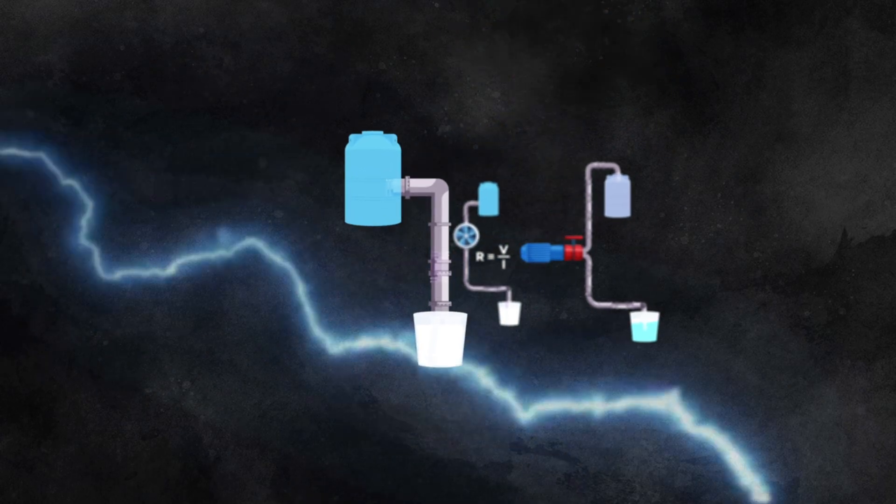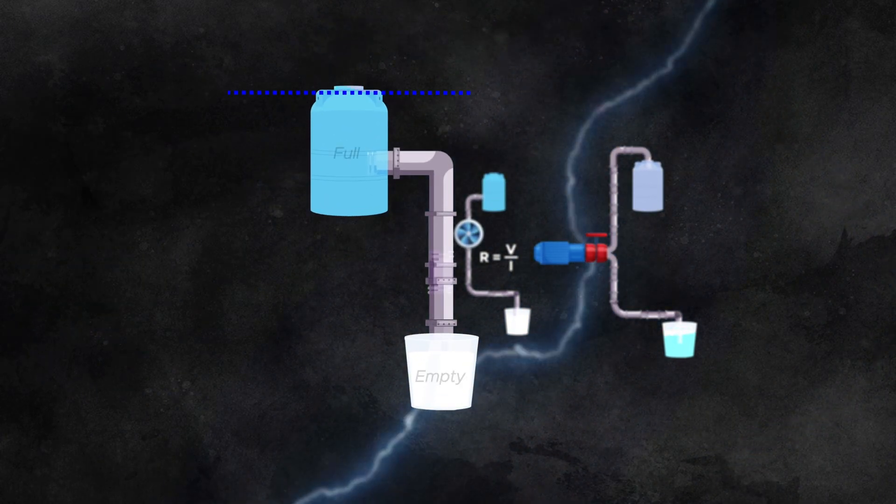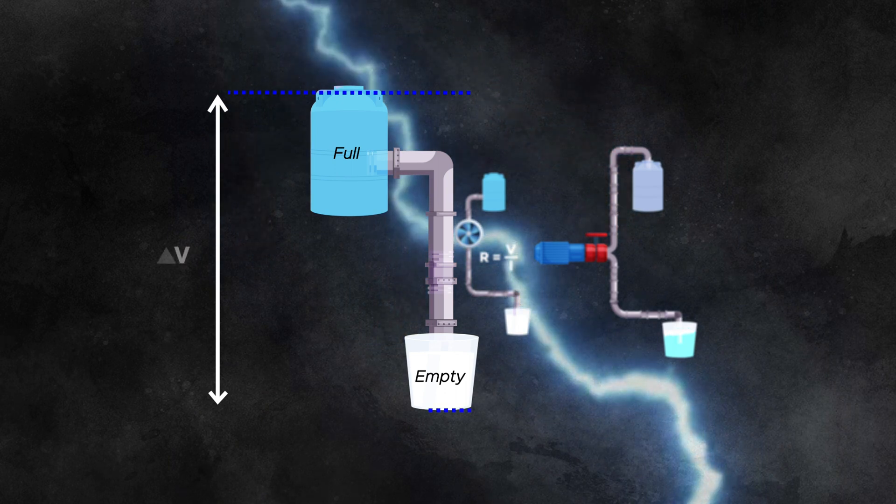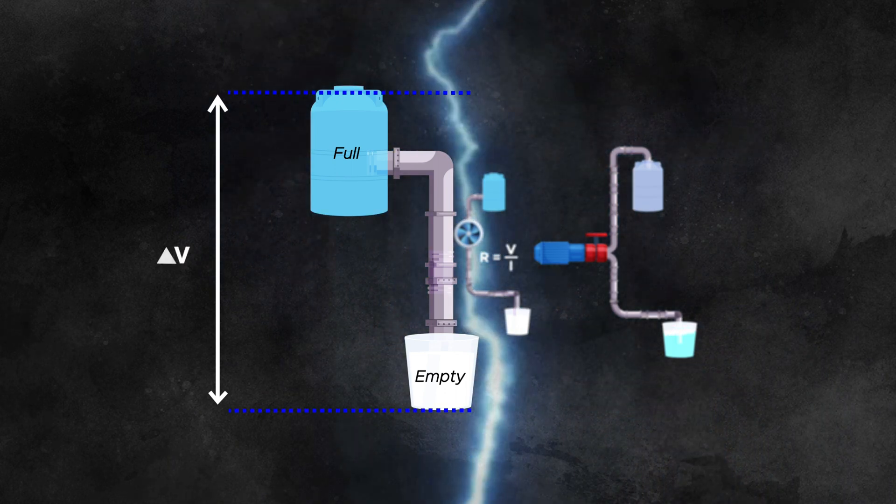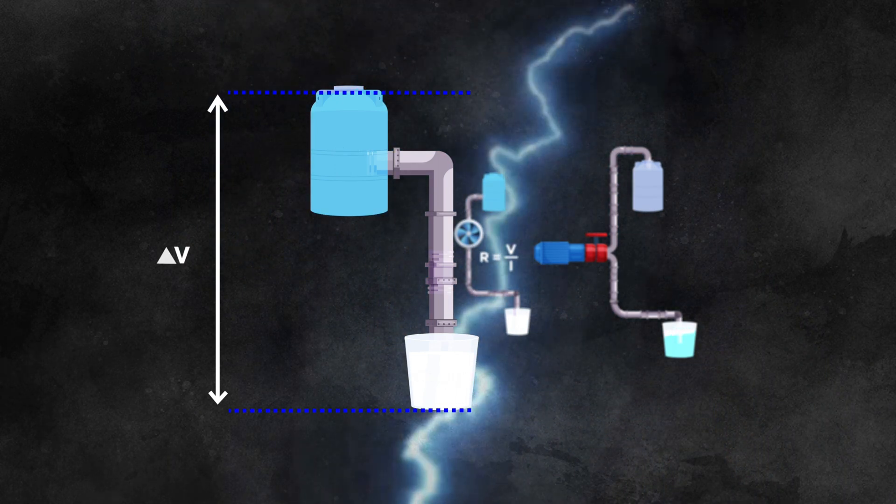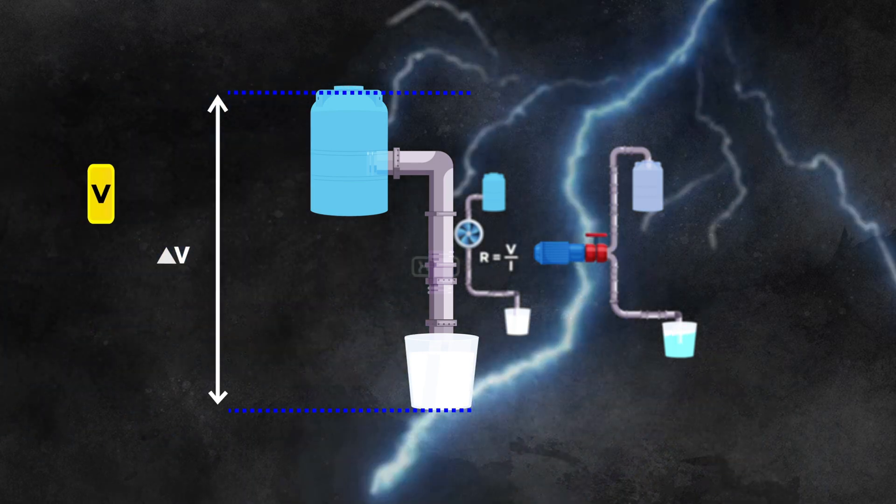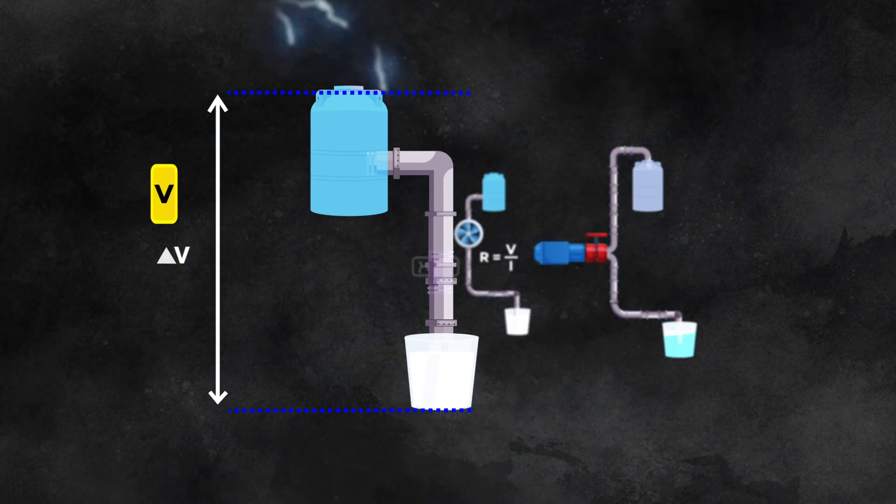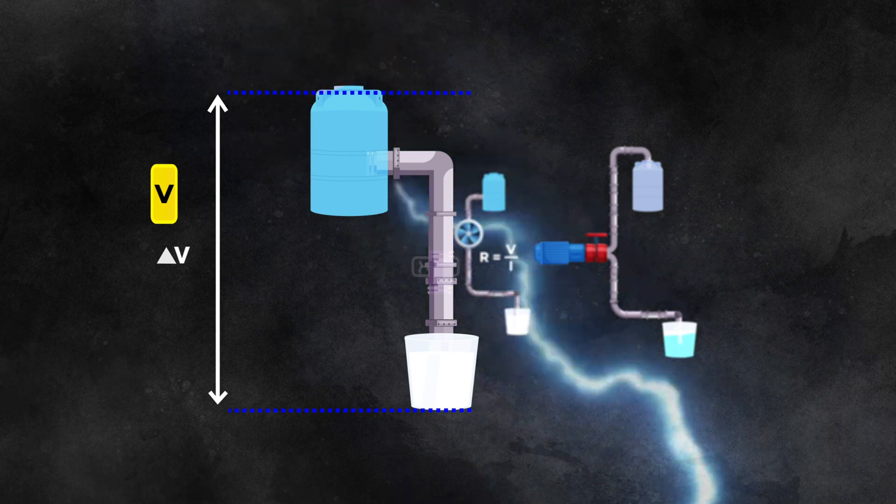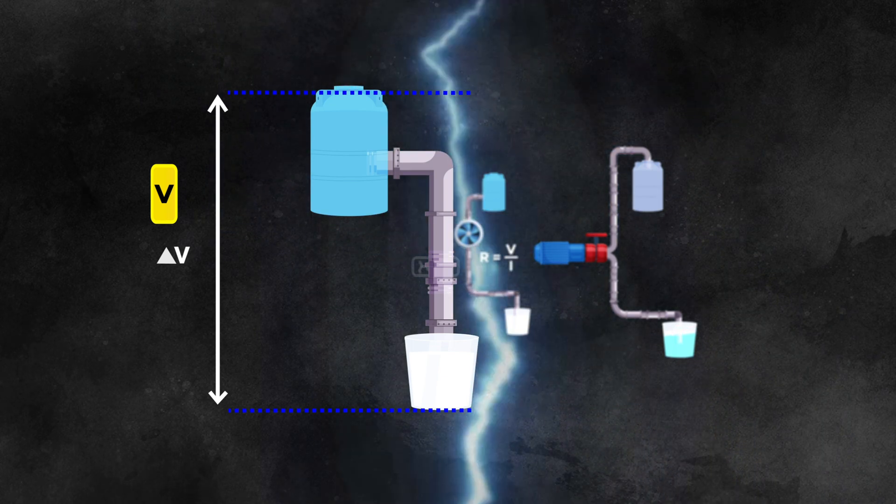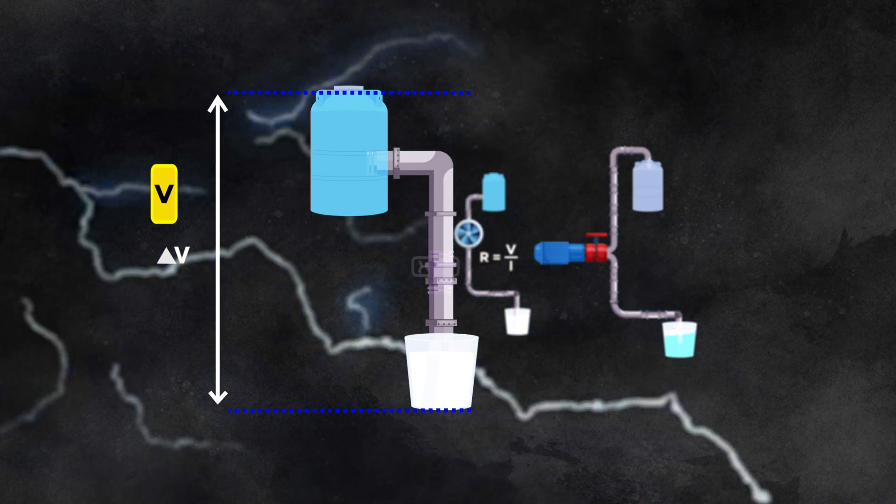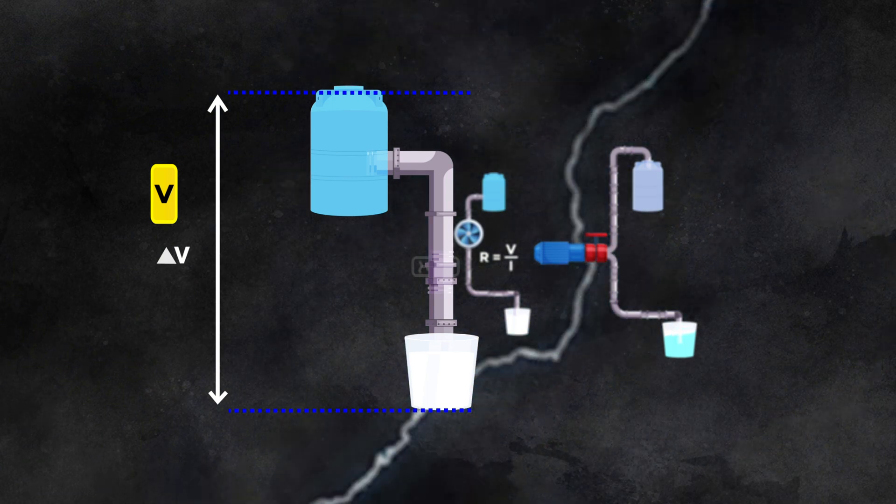The first fundamental concept we will talk about is voltage, also known as the electric potential difference. It refers to the electric potential energy per unit charge in an electric circuit or system. Voltage is measured in volts and represents the force or pressure that drives electric charges to flow in a circuit. It is responsible for powering electrical devices such as lights, motors, and electronic appliances.